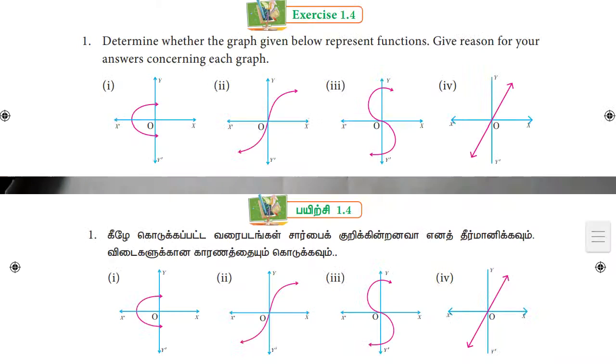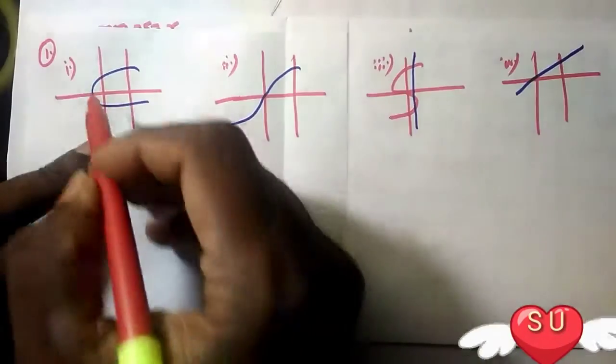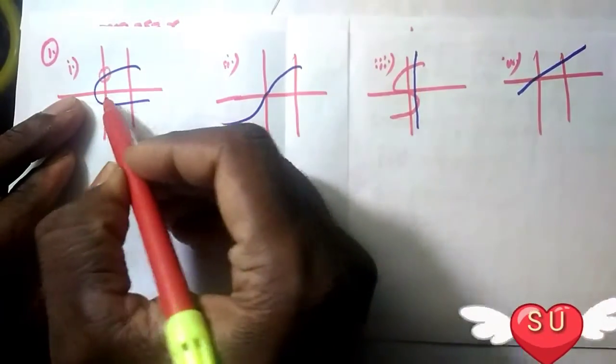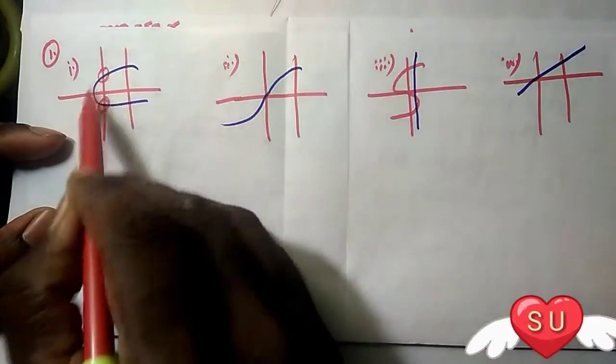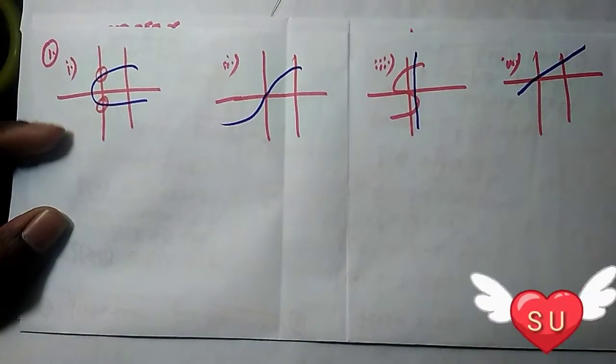For the first function, let's look at graph (i). The x-axis and the line - you can see the line meets at two points. So when a line meets at two points, it is not a function.